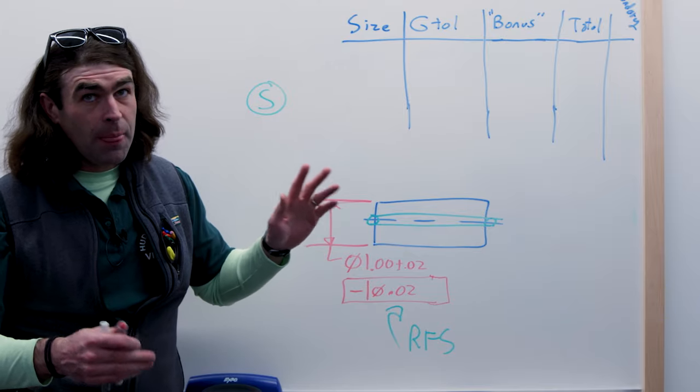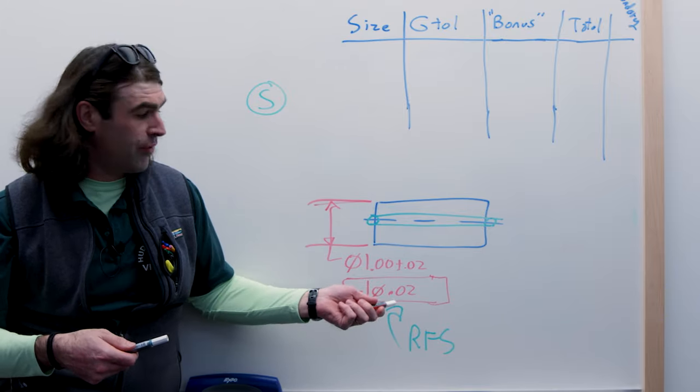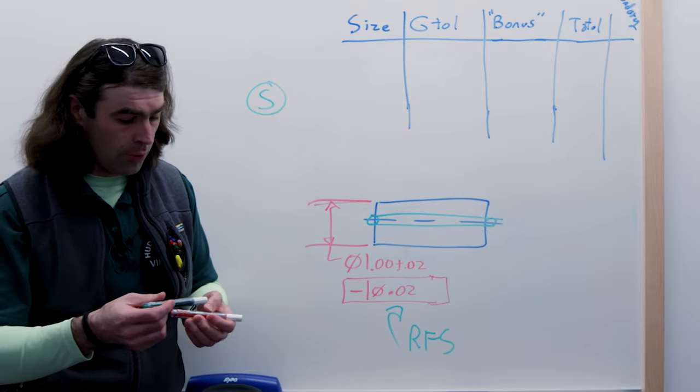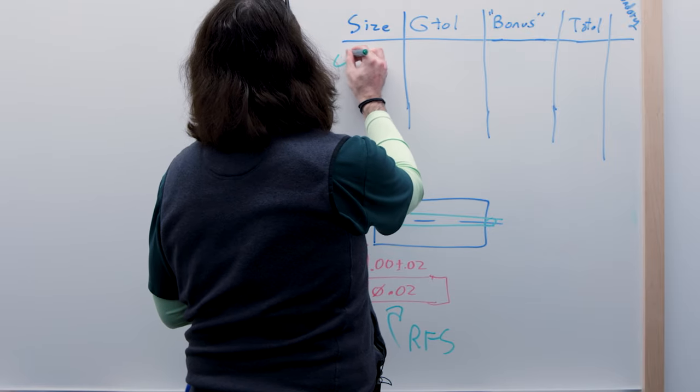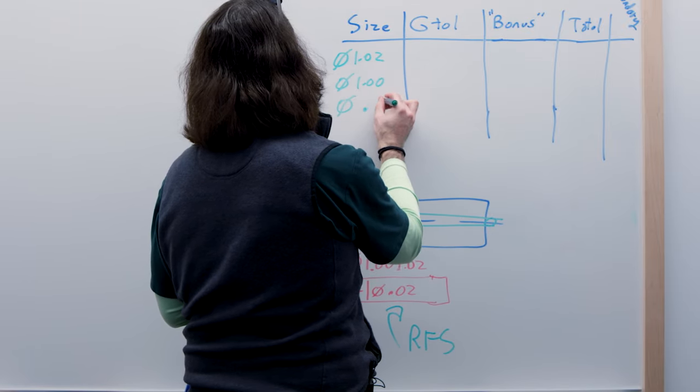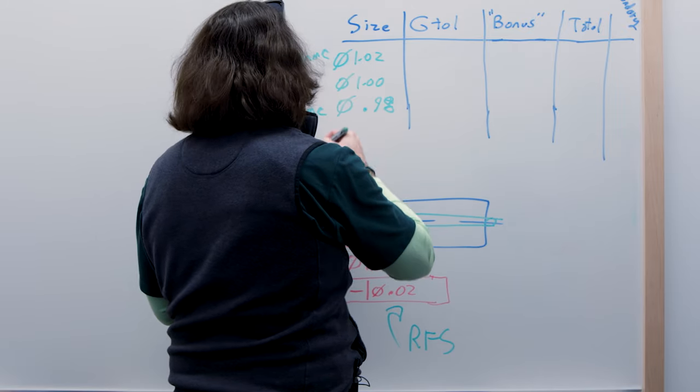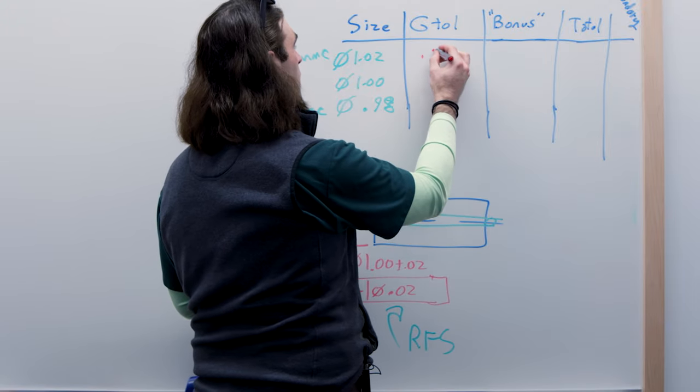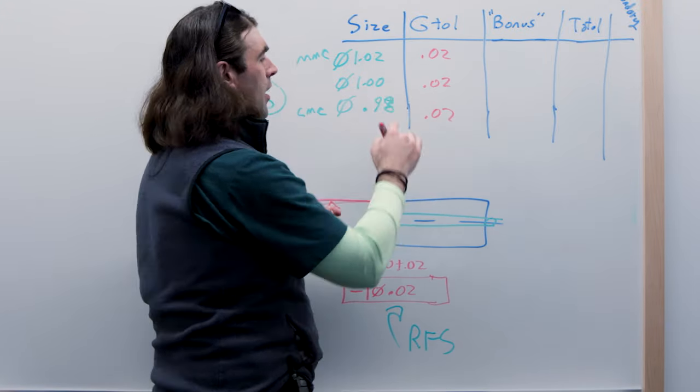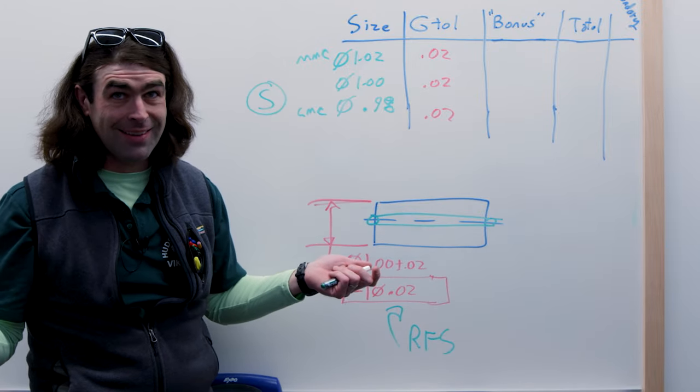What does that mean? If you've ever taken my class, you know I'm going to say this - it means what you think it means. You have 20 thousandths of tolerance no matter what size the feature is. So up here, if our diameter is 1.02, our geometric tolerance is 0.02. It doesn't change at all.